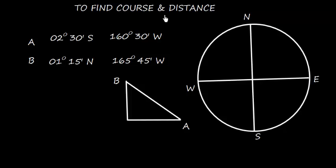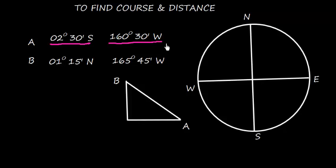We need to find course and distance between two given points. Point A is 2 degrees 30 minutes south and 160 degrees 30 minutes west, and Point B is 1 degree 15 minutes north and 165 degrees 45 minutes west. So we need to mark these points.